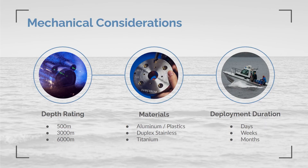Your subsea application will determine the depth rating and material requirements. Aluminum and plastics are generally good for 500 meters or less. Duplex stainless steel is usually used for up to 3,000 meters but it's heavy. If you're deploying for weeks or months, even at depths of only 300 to 1,000 feet, you should consider titanium and plastics for corrosion proofing — titanium is also a very lightweight material. This combination of properties informed our decision to standardize on 6,000-meter titanium for all of our equipment here at Subsea.